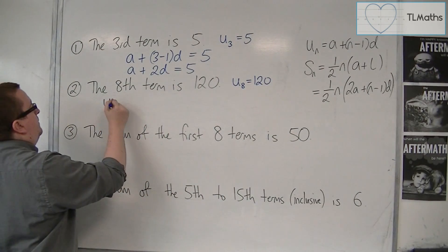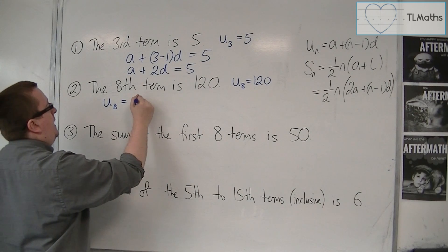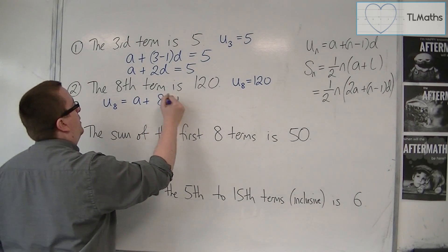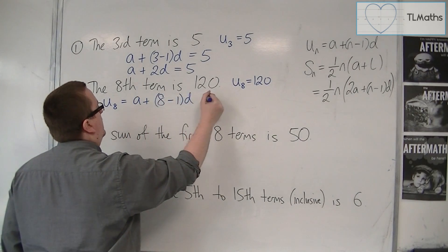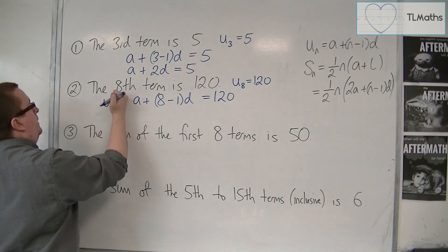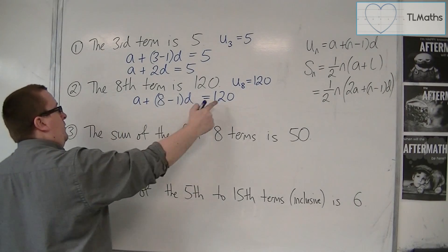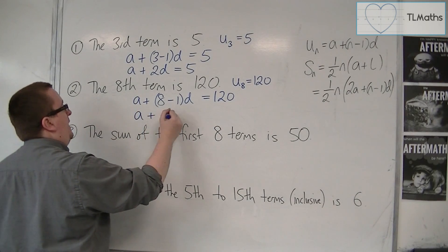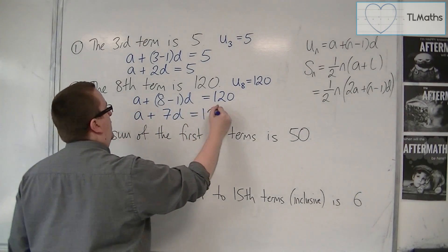So U8 is equal to a plus n minus 1, D. And this, we know, U8 is equal to 120. So I can simplify this equation to say a plus 7D is 120.